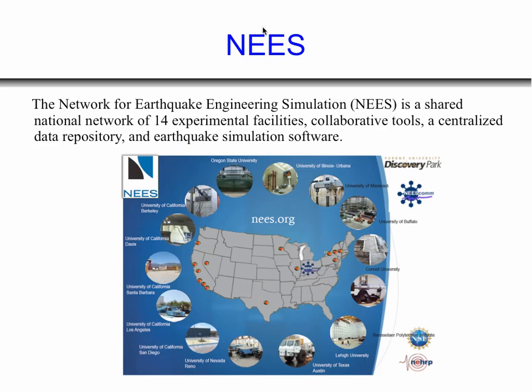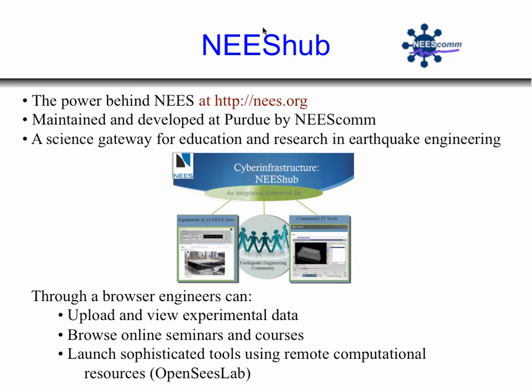A word on NIS — the Network for Earthquake Engineering Simulation — which is paying for the support of OpenSees. It's a network of 14 experimental facilities all tied together. All the data goes into a central repository and they provide tools for simulation. We're going to be using NIS Hub later this afternoon. If you don't have an account yet on NIS Hub, maybe at lunchtime you could apply for one.